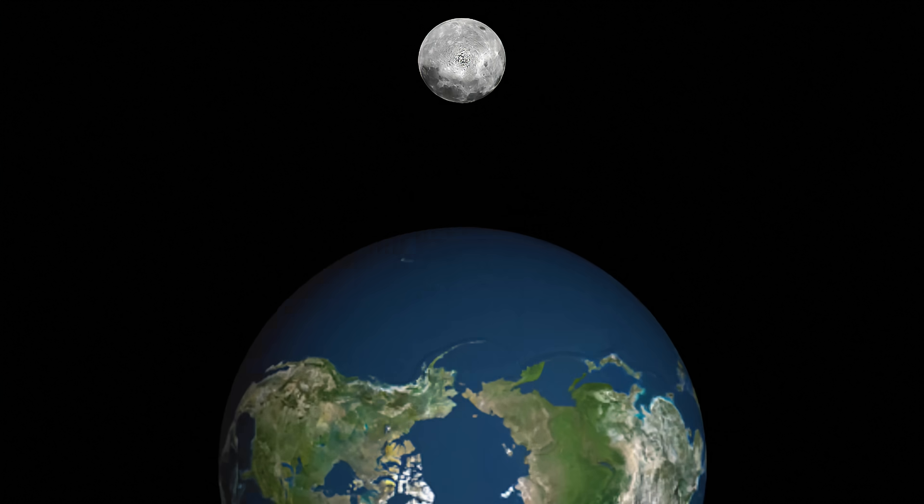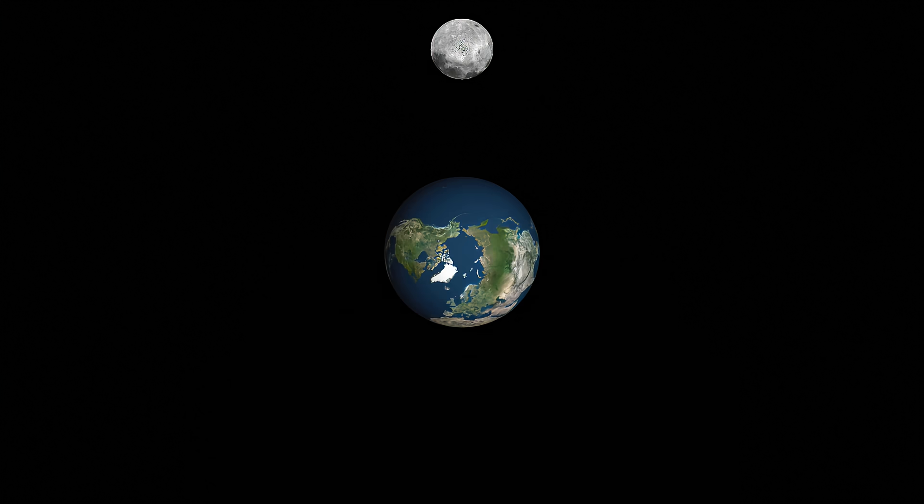This is what prevents the moon from rotating any faster or slower than it does. The moon can only rotate so fast because Earth won't let it do otherwise. As a consequence, the moon rotates only once for every revolution, and only one side of the moon ever faces us.